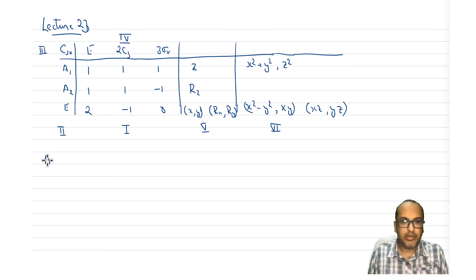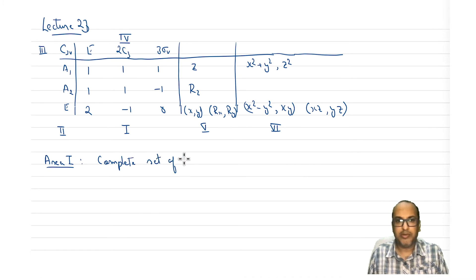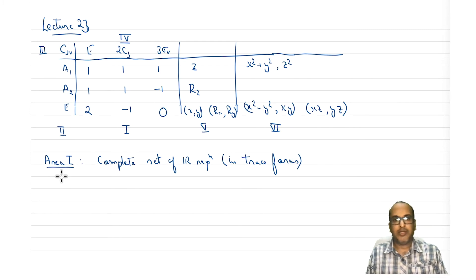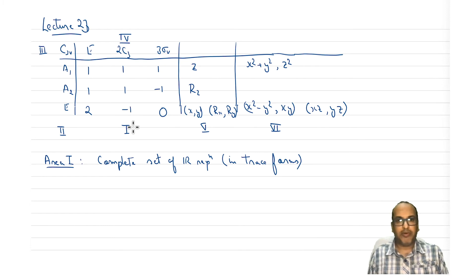Let us talk about area 1 first. This we already know — it is a complete set of irreducible representations in trace form, right? So these are the traces of the representation vectors. Area 1 is something we are well versed with.